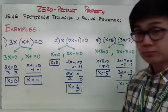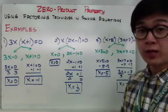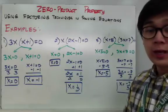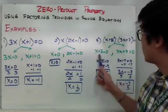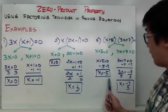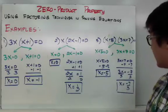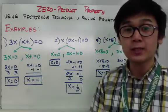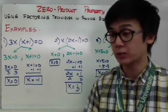For my third example, I have two factors: x plus 5 and 3x plus 7 equal to 0. Using the Zero Product Property, I split them into two equations each set to 0. My first value is x equals negative 5, and my second factor gives a fraction: x equals negative 7 over 3. This is how we use ZPP to solve for x when an equation is already factored.